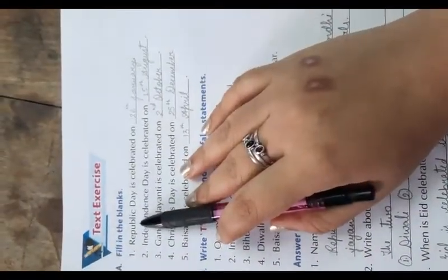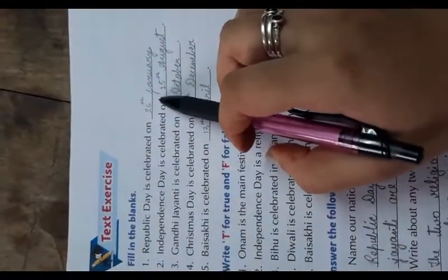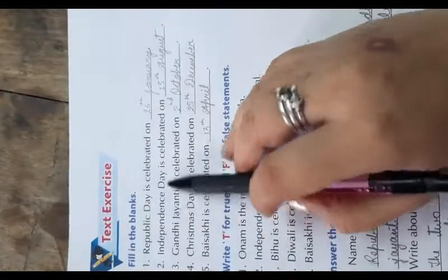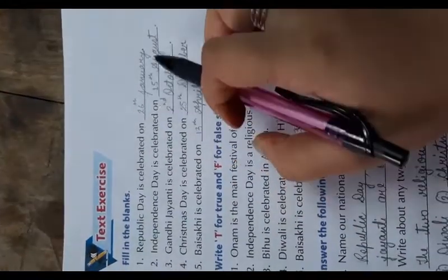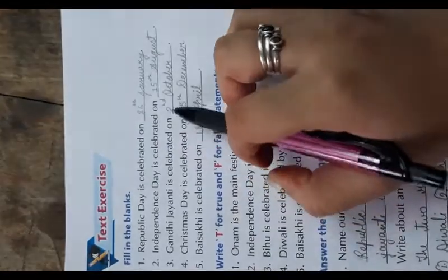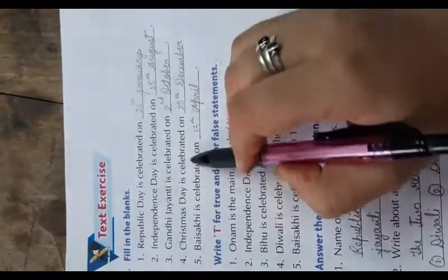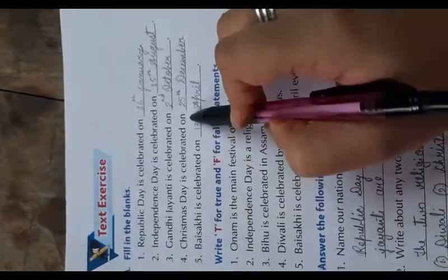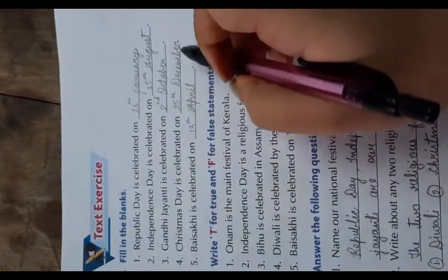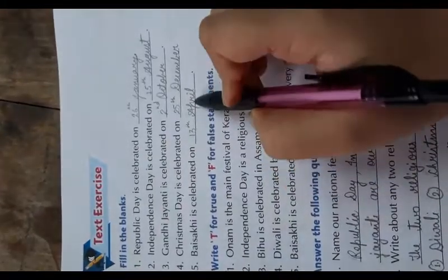Now come to the exercise. Fill in the blanks. Republic Day is celebrated on 26th January. Independence Day is celebrated on 15th August. Gandhi Jayanti is celebrated on 2nd October. Christmas Day is celebrated on 25th December. Baisakhi is celebrated on 13th April.